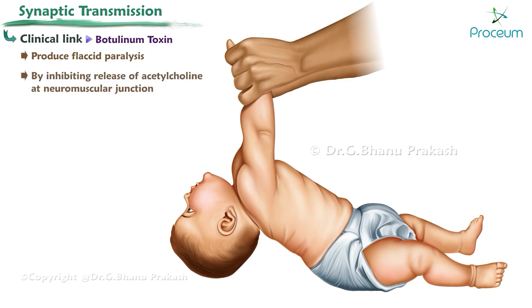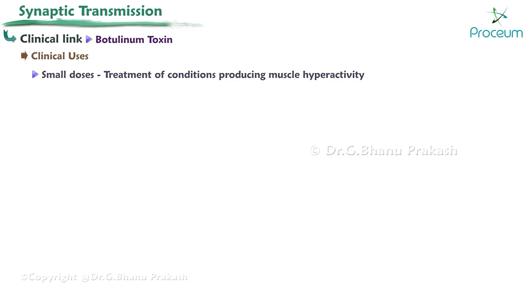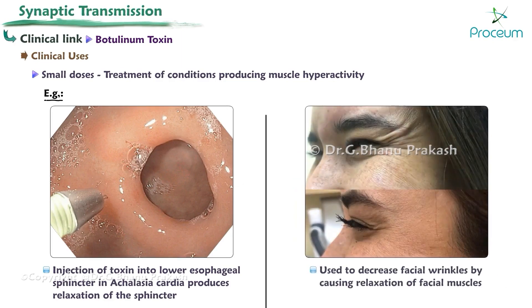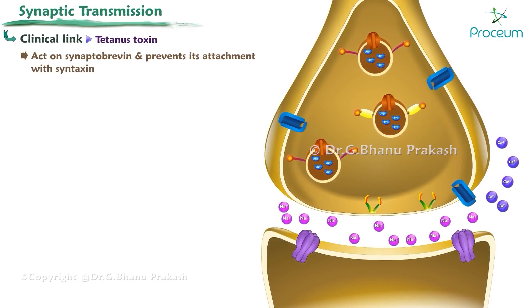Thus, botulinum toxins produce flaccid paralysis by inhibiting release of acetylcholine at the neuromuscular junction. Clinically, botulinum toxin in small doses is used to treat conditions that produce muscle hyperactivity. For example, injection into the lower esophageal sphincter in achalasia cardia produces relaxation of the sphincter. In low doses it is also used to decrease facial wrinkles by causing relaxation of facial muscles.